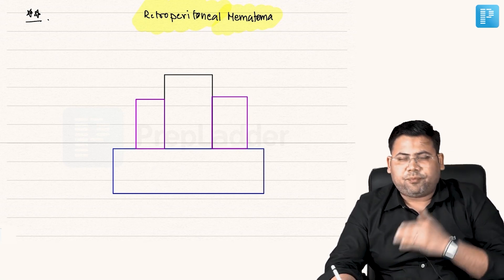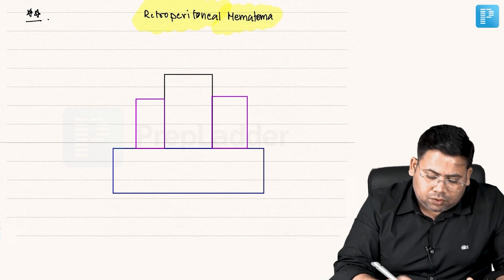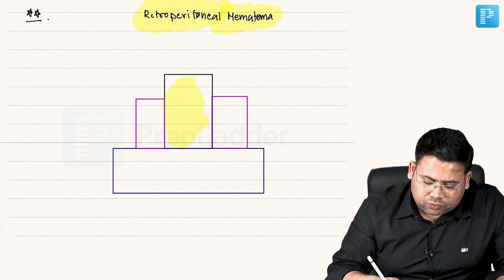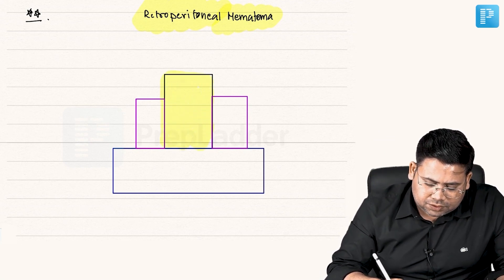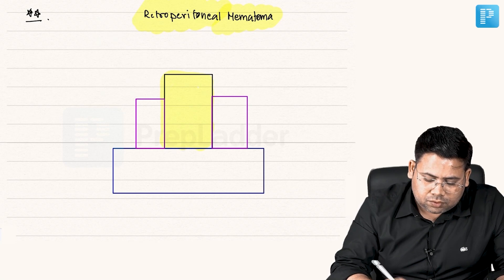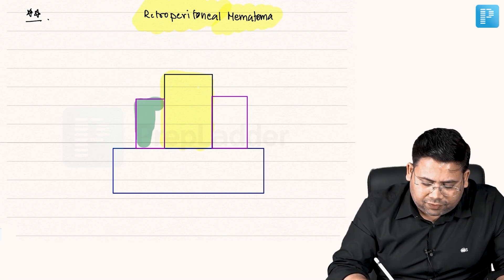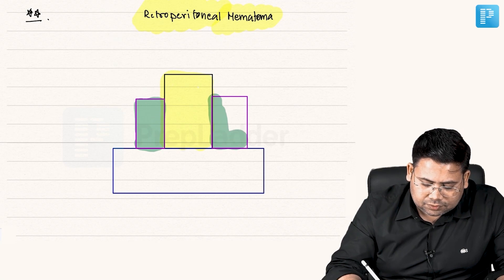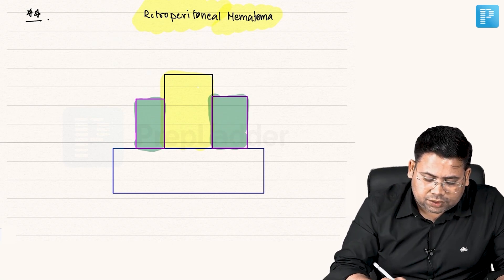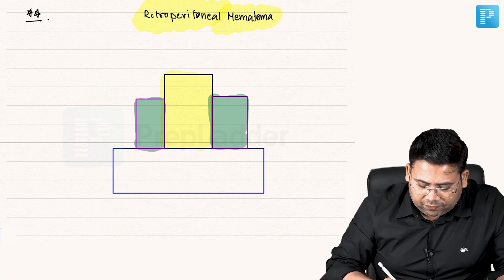We have flanks, we have pelvis, we have central zone. If you see, this is the central zone. What zone is this? These are the flanks. And then what zone is this? This zone is the pelvis.